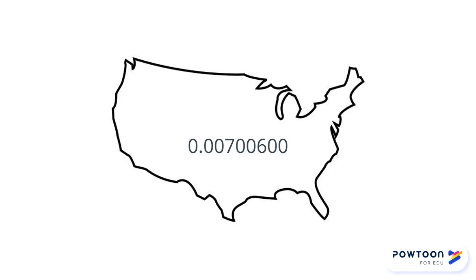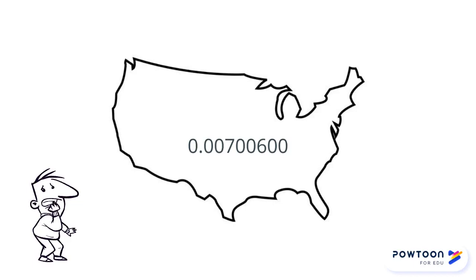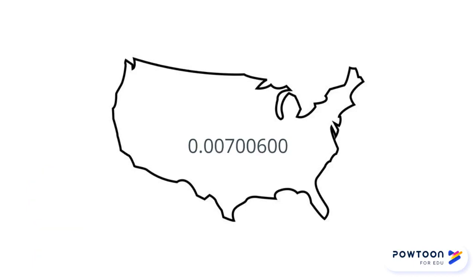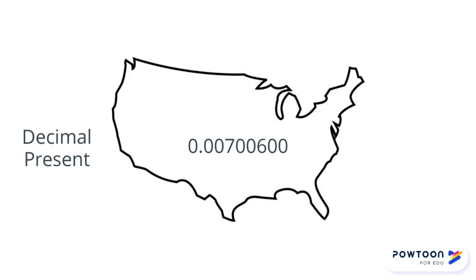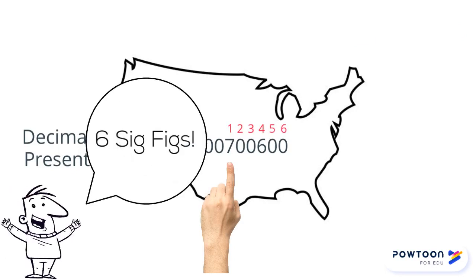0.00700600 — look at all those zeros. This is intimidating, but we're just going to stick to the plan. Is there a decimal present? There is, so we start on the Pacific, left side, and count toward the right. Since the first three are zero, we don't count them. We'll start counting at the number seven and then count all of the digits — six sig figs.